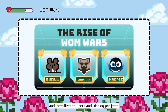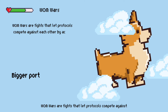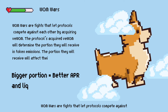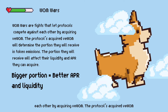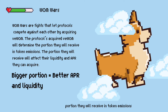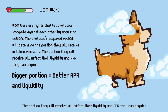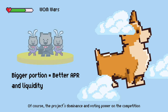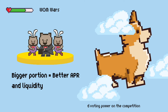Wom Wars are fights that let protocols compete against each other by acquiring vWOM. The protocols' acquired vWOM will determine the portion they will receive in token emissions. The portion they receive will affect their liquidity and APR they can acquire. Of course, a project's dominance and voting power in the competition depends on its community and loyal holders.